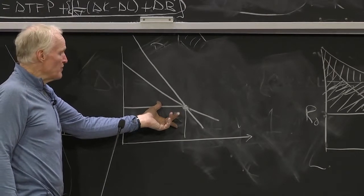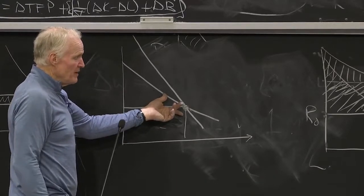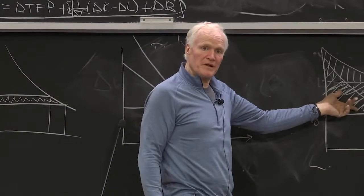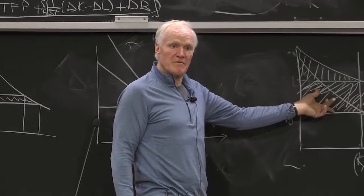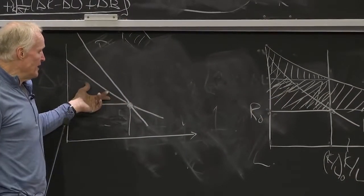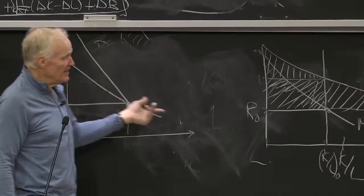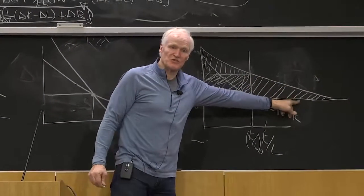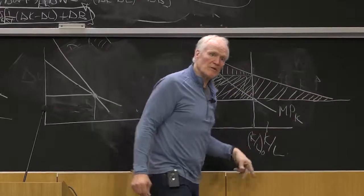The total increase for labor for a given level of TFP would actually be smaller than it would be here. They actually get more here than here, because here they only get the TFP growth that happened initially. Here they also pick up this additional triangle from capital.